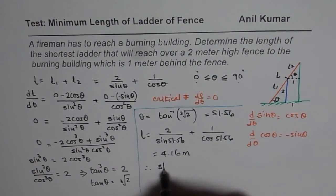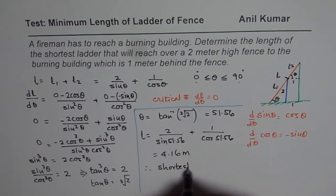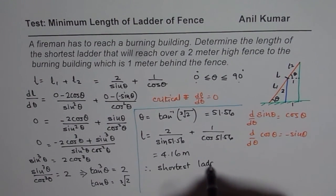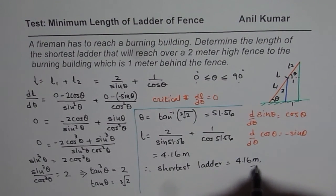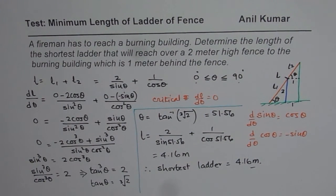So 4.16 meters is basically the answer for this particular question. So the shortest ladder equals to 4.16 meters. So I hope that is absolutely clear. Thank you and all the best.